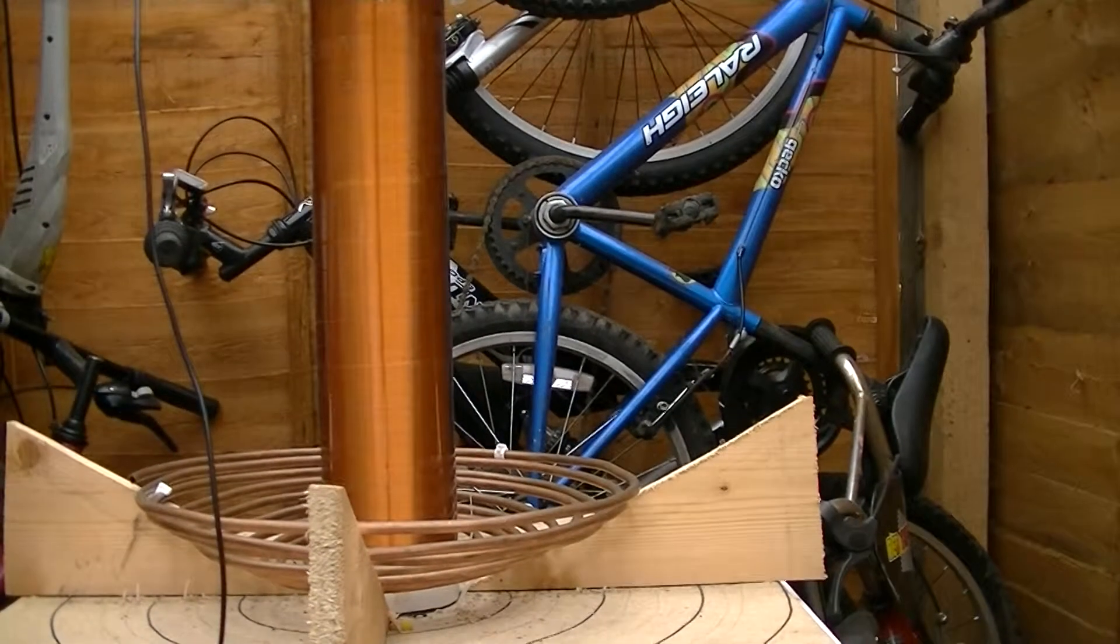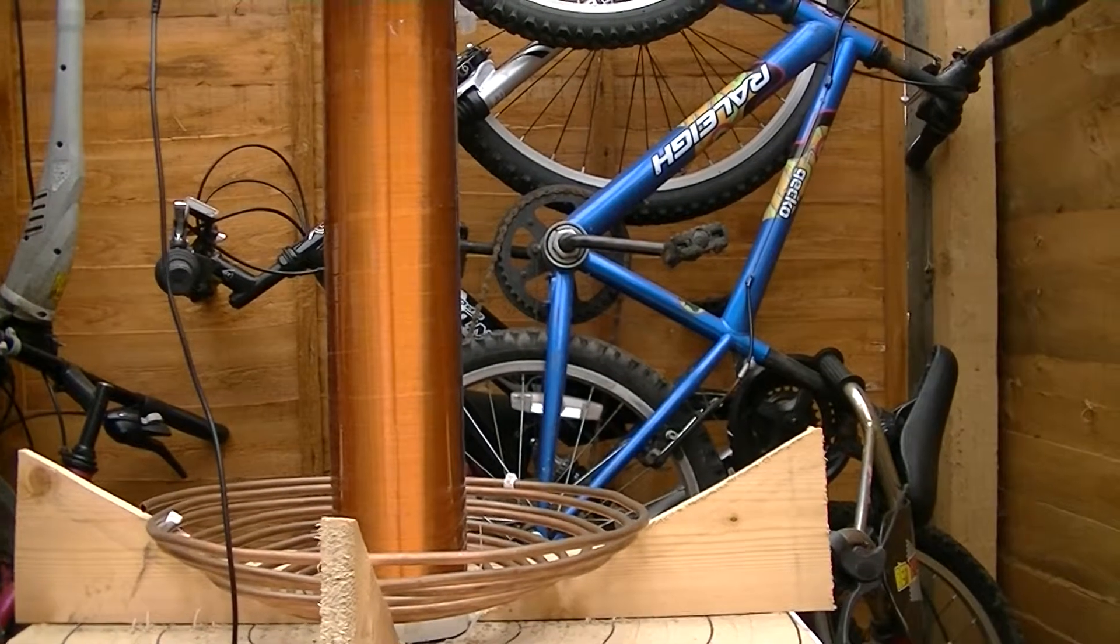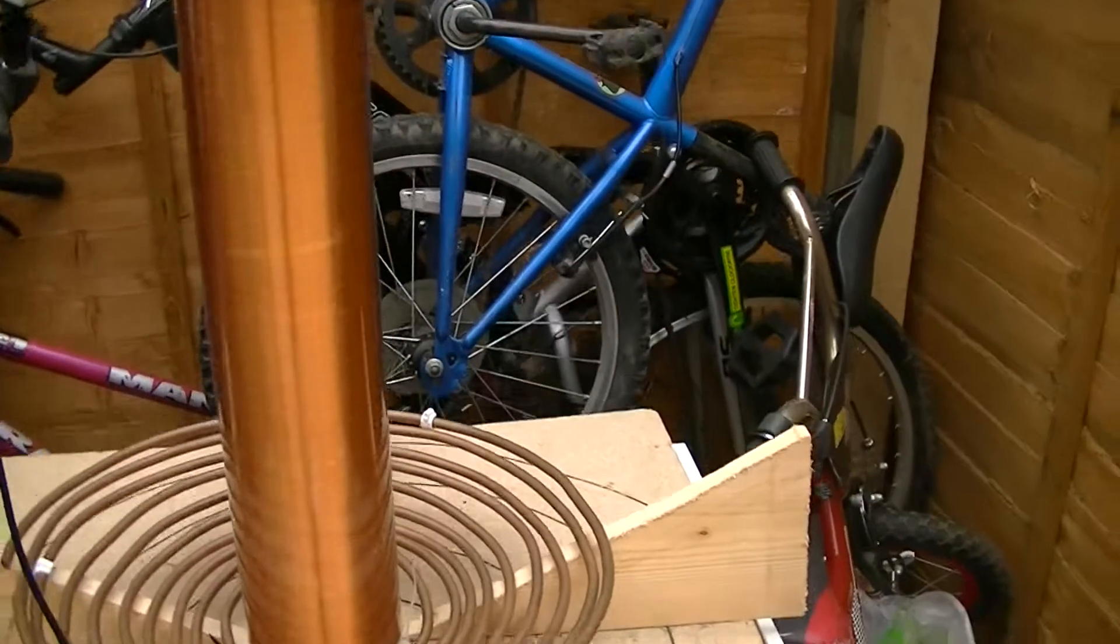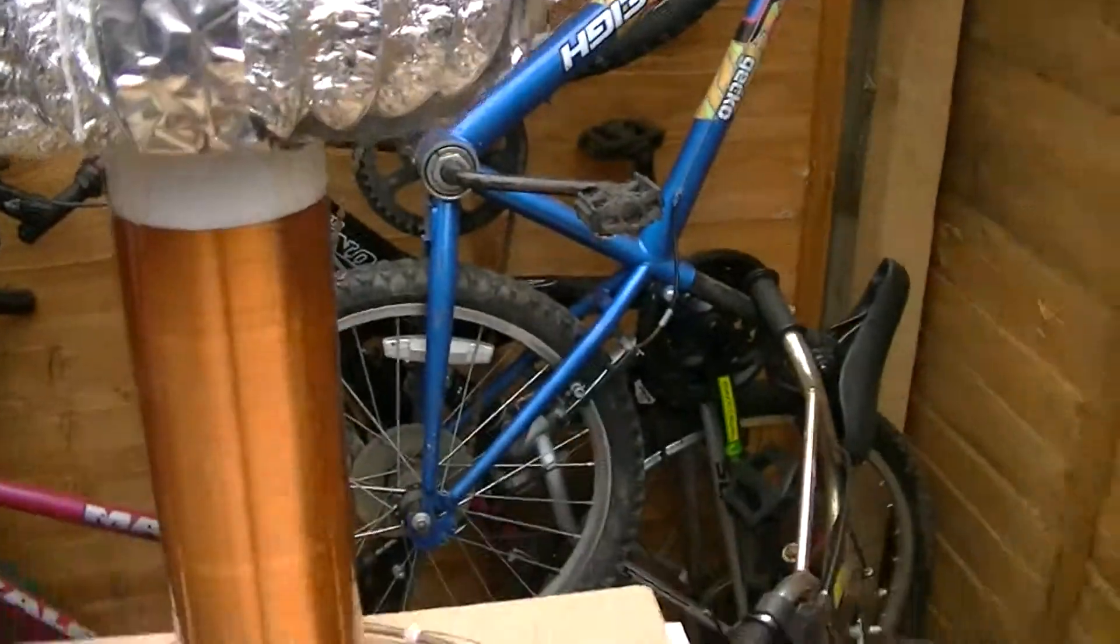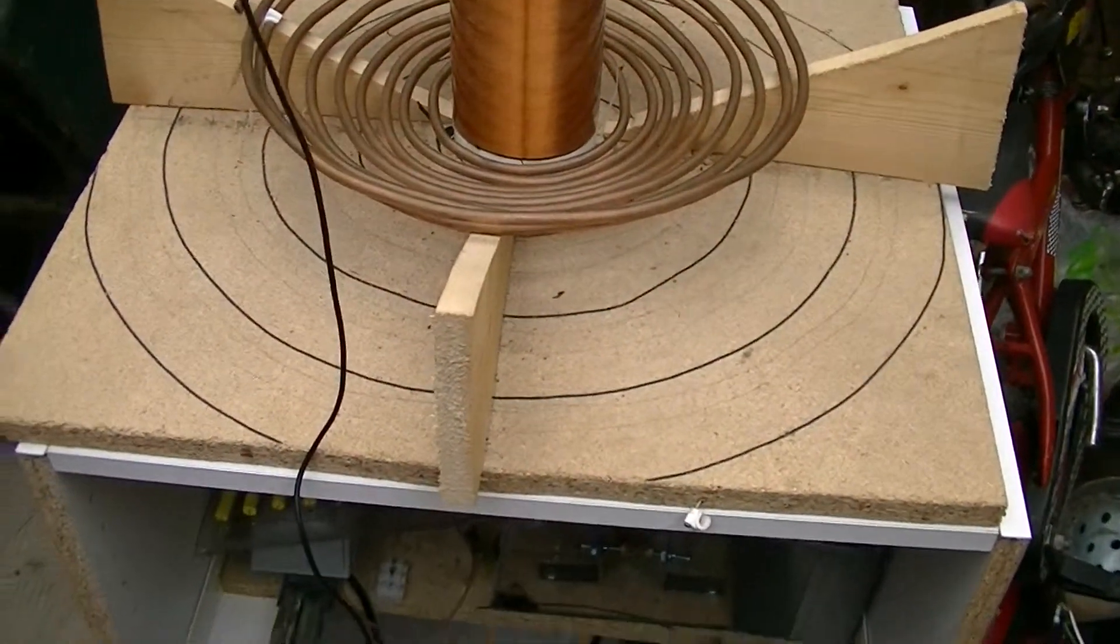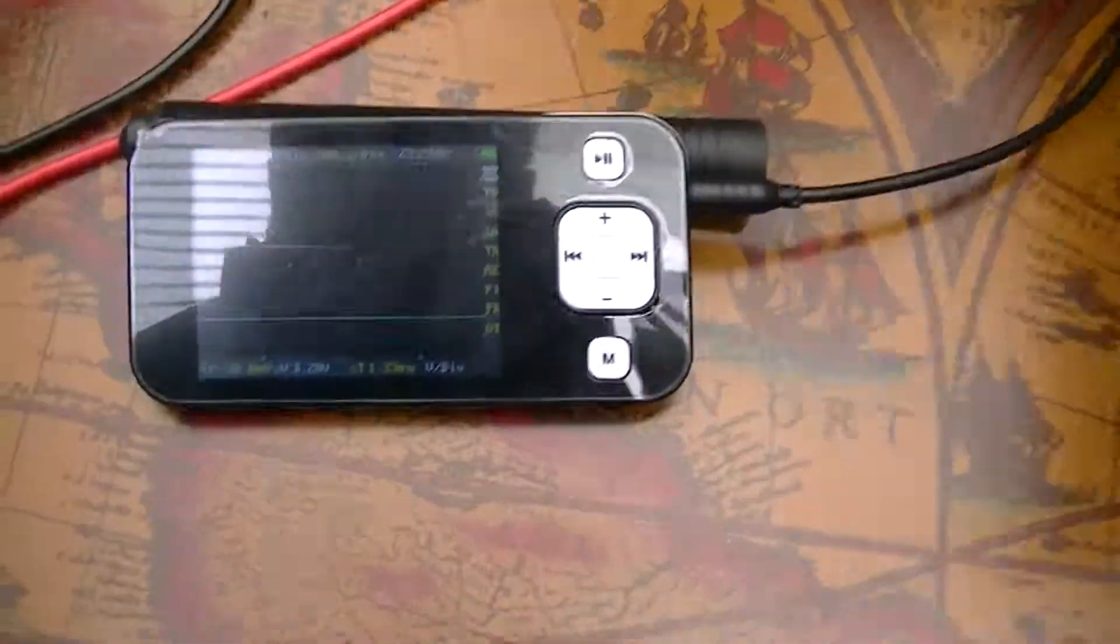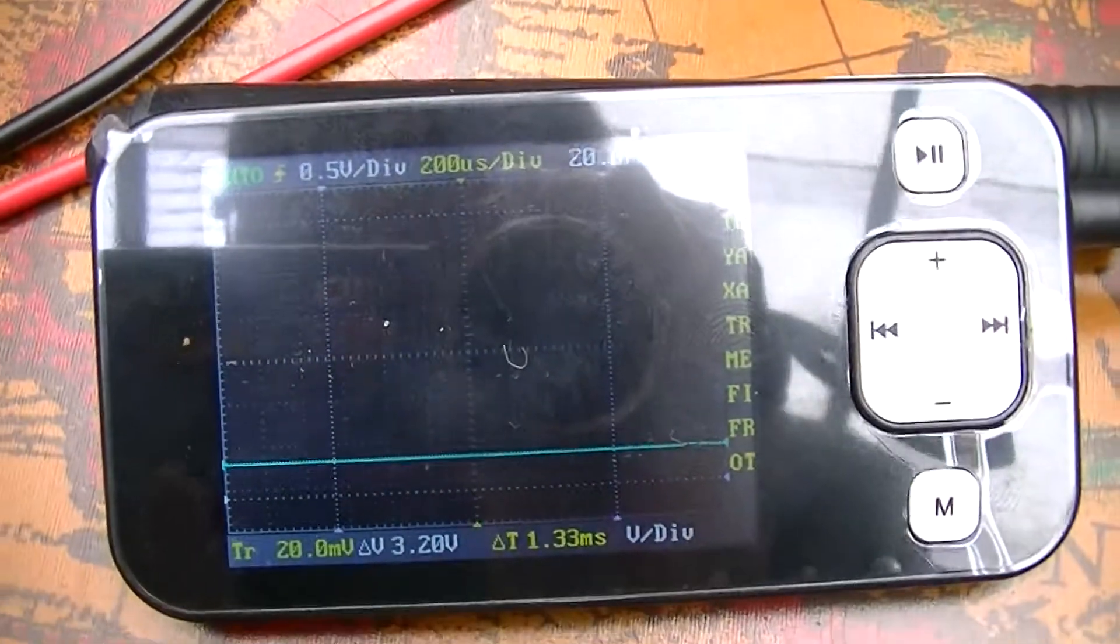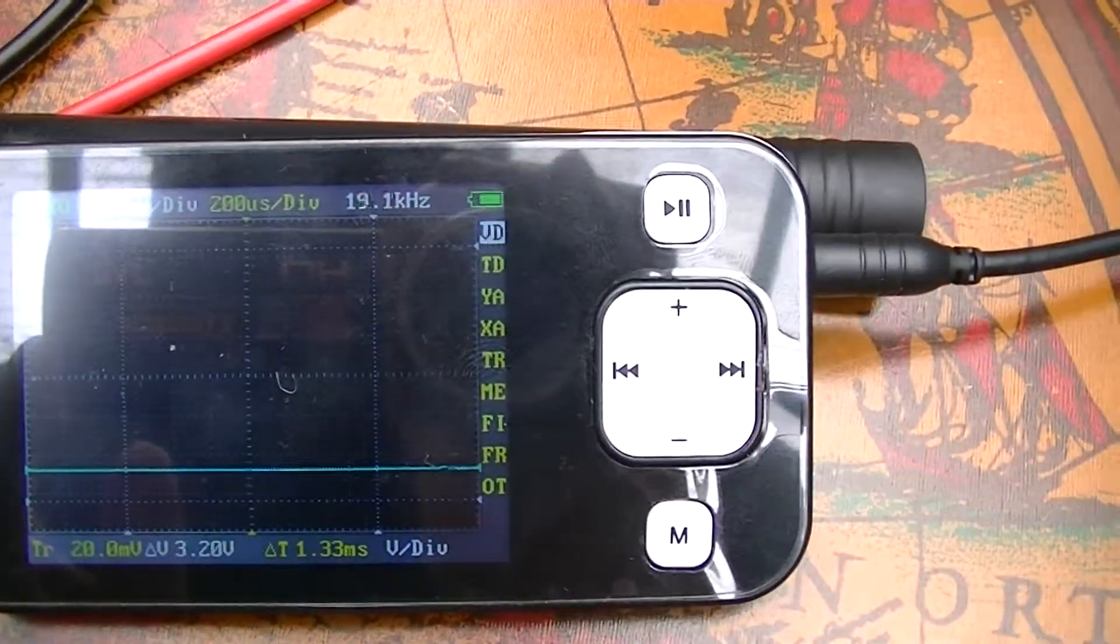Okay, this is my Tesla coil and I'm going to show how to test and check the frequency on the secondary coil. I've already connected my digital oscilloscope. So it's connected.